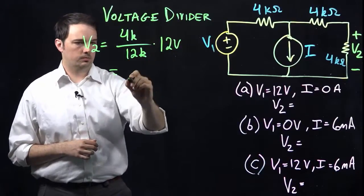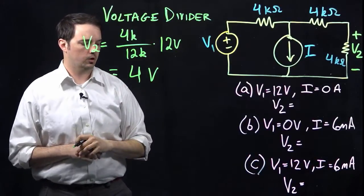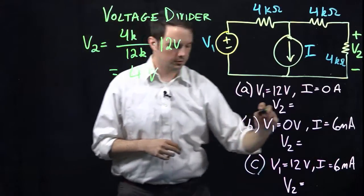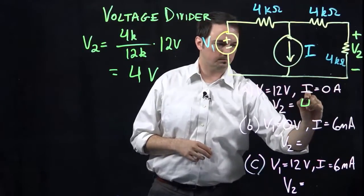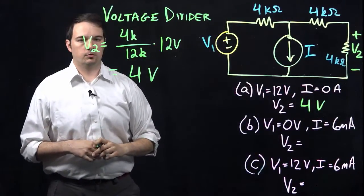So a little easy math here would give us that voltage V2 is equal to 4 volts overall, using the voltage divider rule. So let's move on to part B.